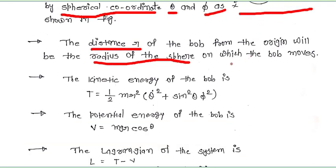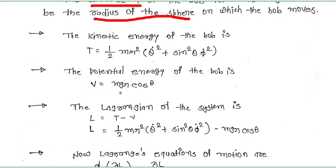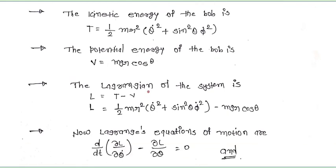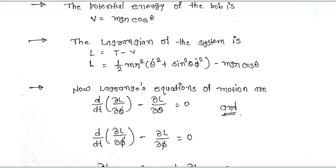Now we recall the kinetic energy and potential energy of the spherical pendulum. The kinetic energy of the bob is one-half m r squared in bracket theta-dot squared plus sin-squared theta into phi-dot squared, and the potential energy of the bob is mgr cos theta. Now we know that the Lagrangian of the system is L equals T minus V. So L equals one-half m r squared in bracket theta-dot squared plus sin-squared theta phi-dot squared, minus mgr cos theta.